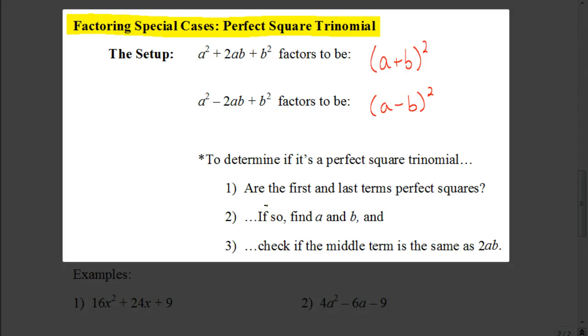Now, in order for it to be a perfect square trinomial, it has to be in one of these two formats. It has to be either in the form a squared plus 2ab plus b squared, or a squared minus 2ab plus b squared.